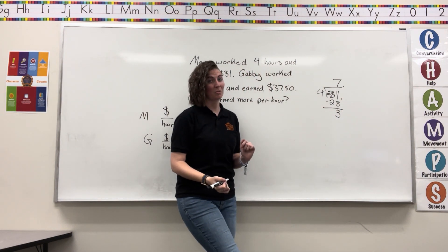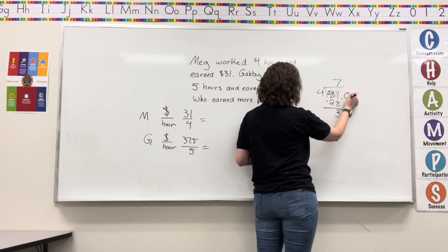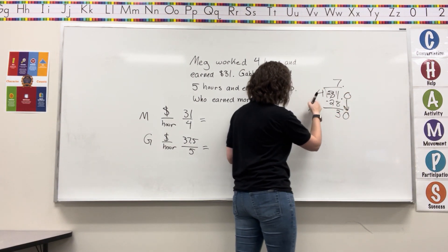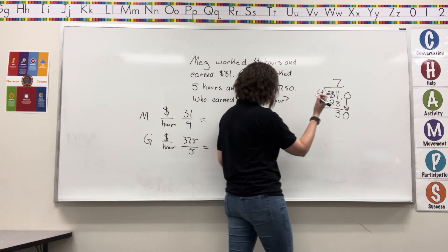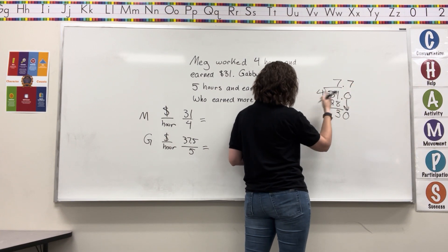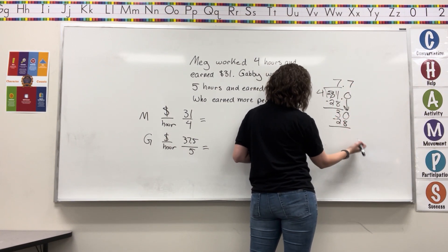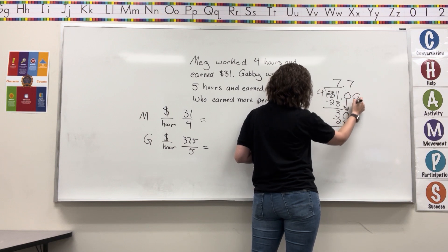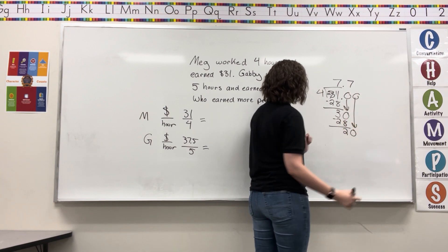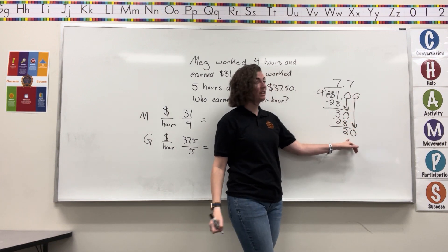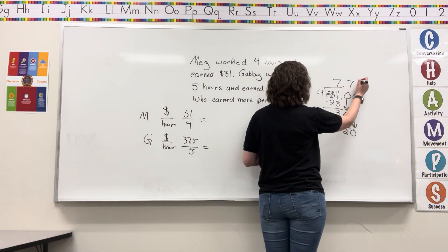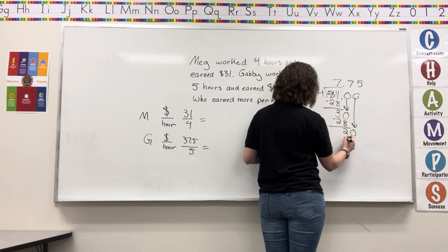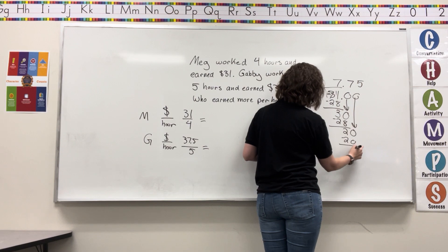Throw in a decimal, because we're working with money. Four goes into thirty seven times. Seven times four is twenty-eight again. Subtract and we get two. Bring down your other invisible zero. Four goes into twenty five times. Five times four is twenty. And we're done.